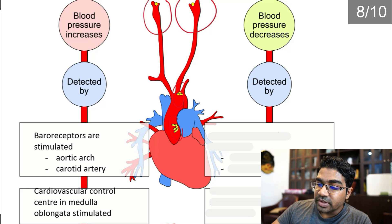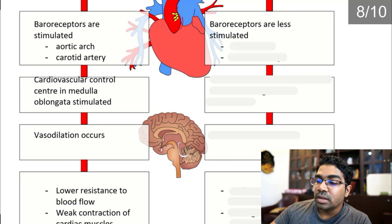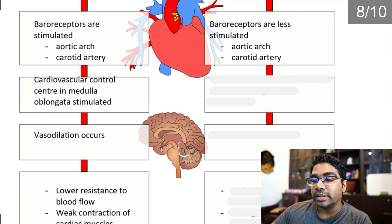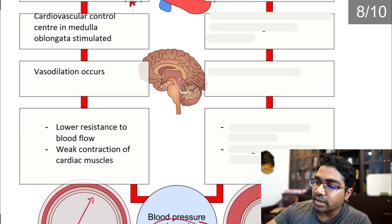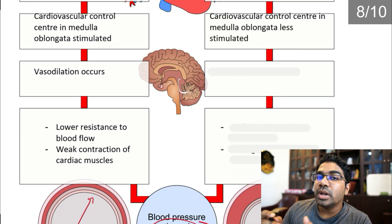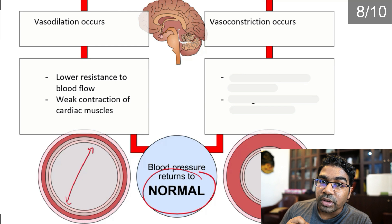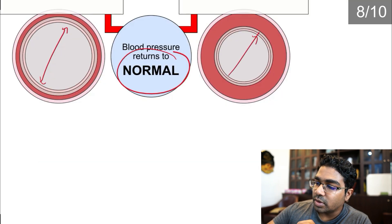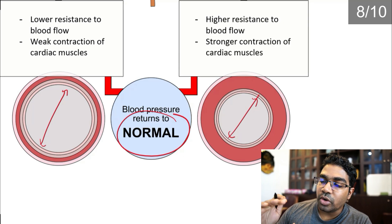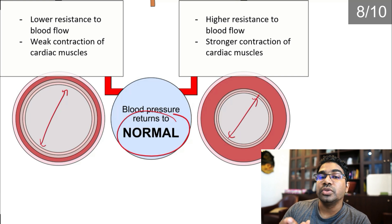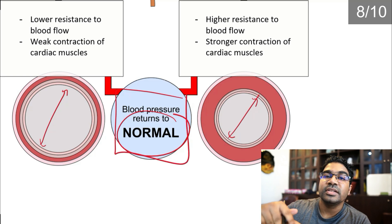When blood pressure decreases, the baroreceptors are less stimulated — they are still in the aortic arch and carotid artery but now less stimulated — so the cardiovascular control center in the medulla oblongata is also less stimulated. As a result, vasoconstriction occurs, causing higher resistance to blood flow and stronger contraction of cardiac muscles. Together these effects bring blood pressure back up to the normal range.